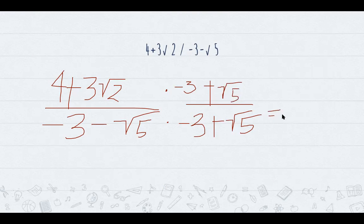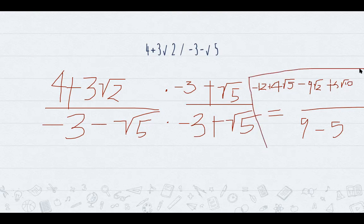You would just multiply cross, which would get you 9 minus 5. And then the top would be negative 12 plus 4 radical 5 minus 9 radical 2 plus 3 radical 10. That would be your final answer. But 9 minus 5, you could just change it to denominator 4.